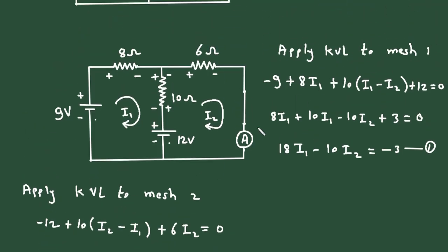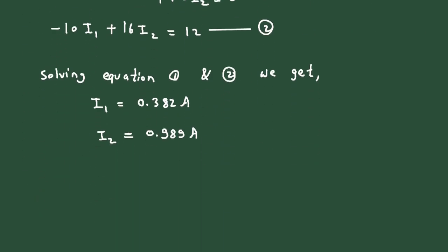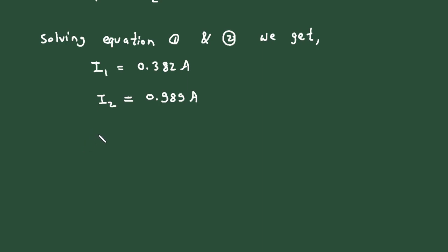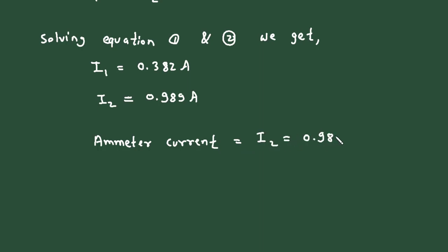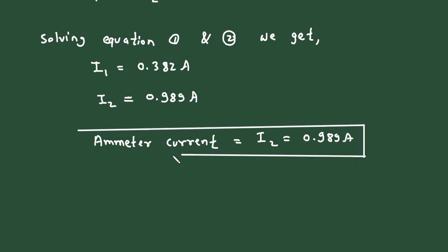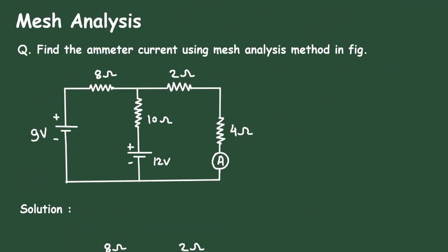So this is how we find the values of I1 and I2. We had to find the current through the ammeter, which means we need I2. Therefore, the ammeter current equals I2, which is 0.989 ampere. Check the link in the comment section and install the app for free. Thanks for watching.